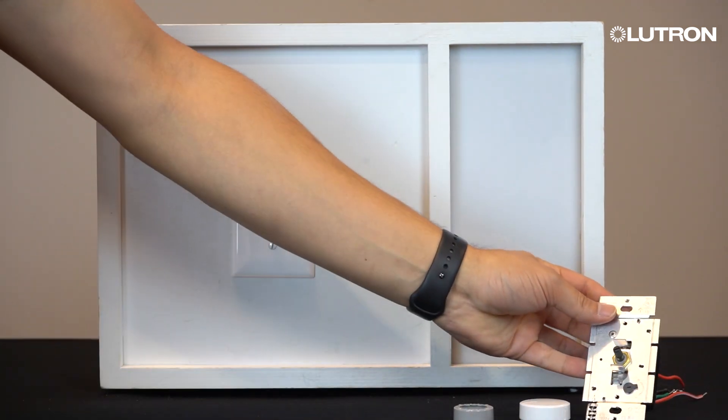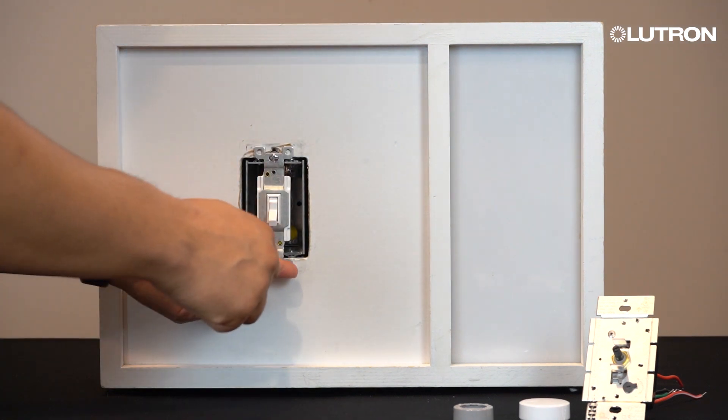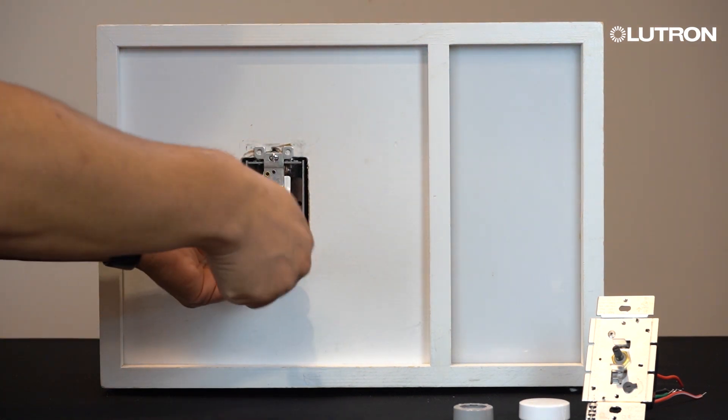Now we are ready to install the dimmer. First, disconnect and remove the existing switch from the wall.